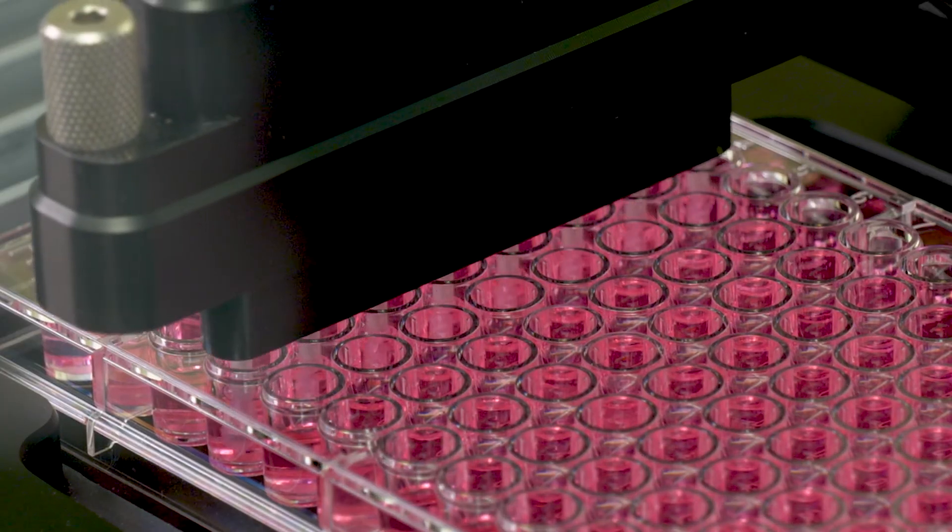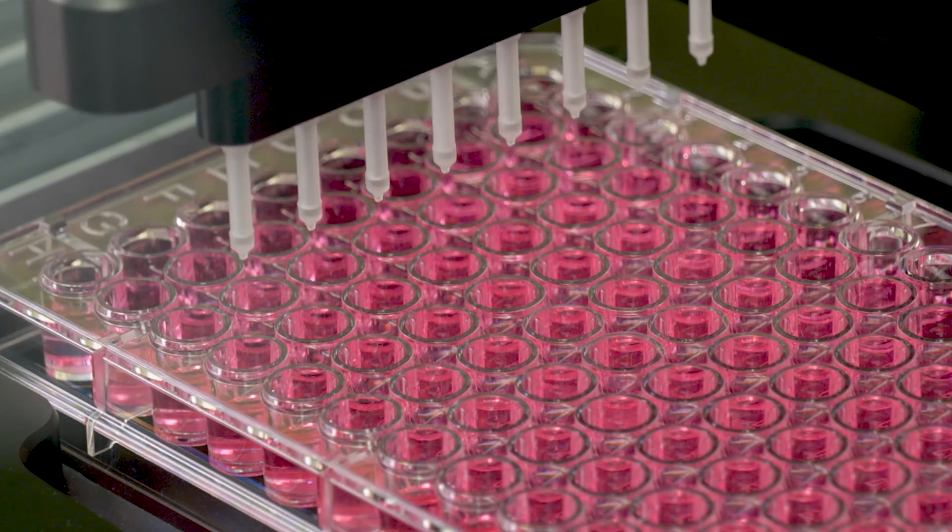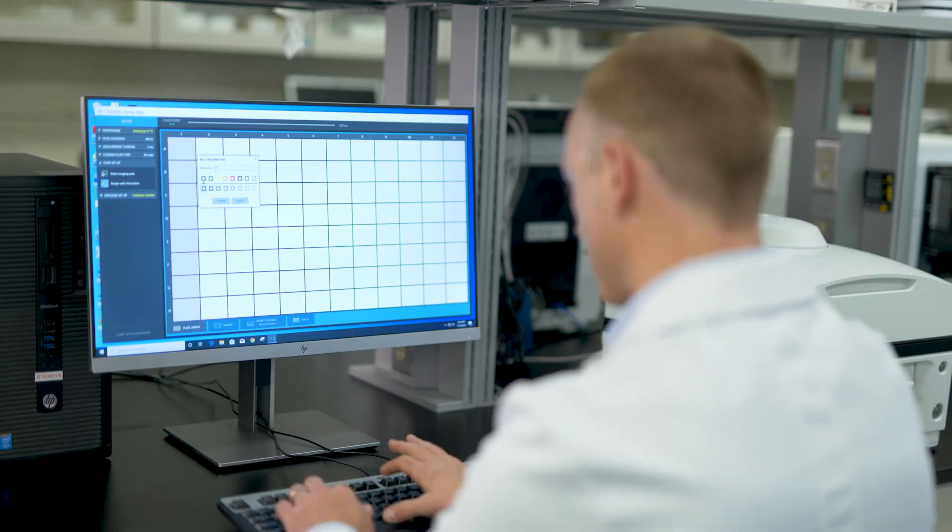The auto-scratch wound making tool and the Scratch Assay app provides a simple, straightforward way to automatically create uniform, reproducible wounds in 96 and 24 well microplates. The Scratch Assay app automates capture and analysis of kinetic images and generates detailed quantitative profiles of cell migration. The result is better data and higher throughput.